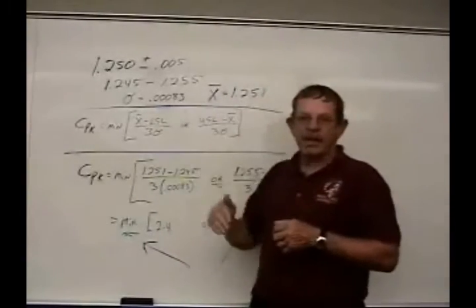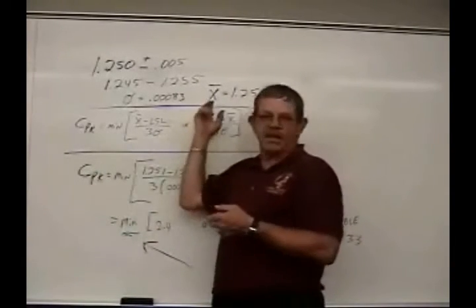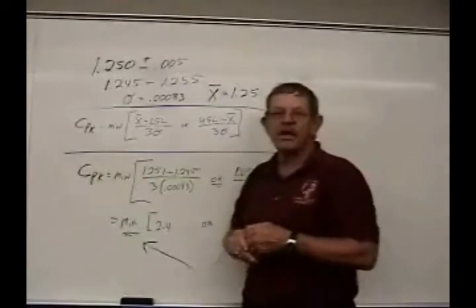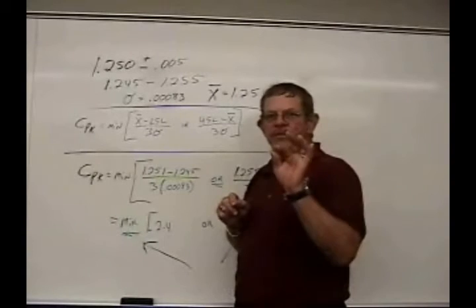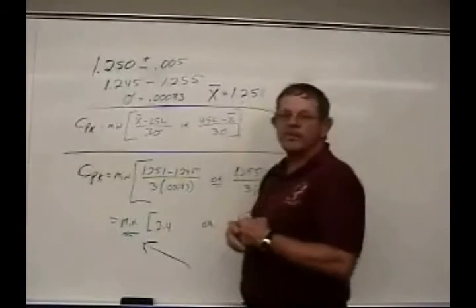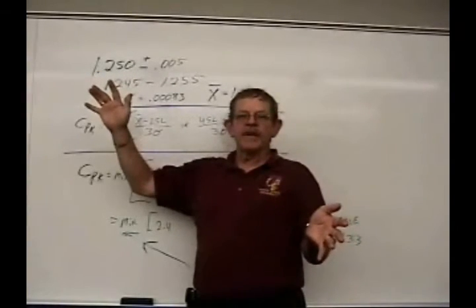After adding up all the parts, measuring them and dividing by 100, because that's the sample size we used, we found out that X bar, or the average mean value of the part, is 1.251. So we have all the numbers we need now to figure out the capability index.